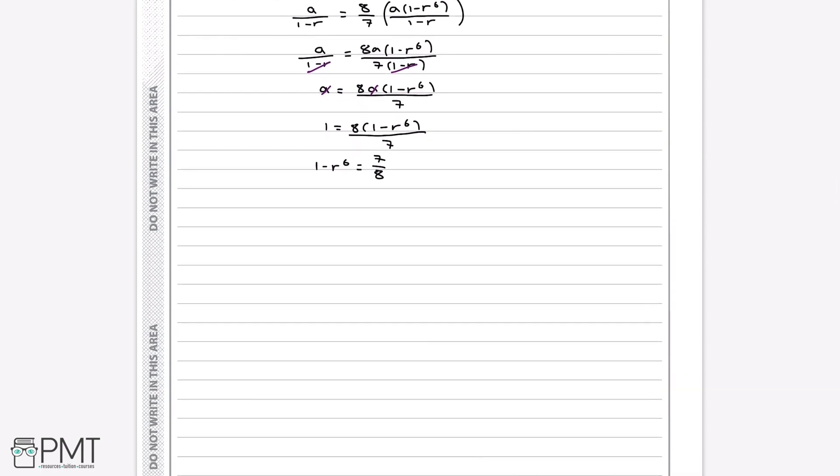Now if we go further to solve this, and add r to the power of 6 to both sides, and then take away 7 over 8 from both sides, we're left with r to the power of 6 is equal to 1 over 8. And now this gets us our next two marks. Getting the formula just in terms of r is our second method mark, and then our third method mark comes from getting that r to the power of 6 is equal to 1 over 8.